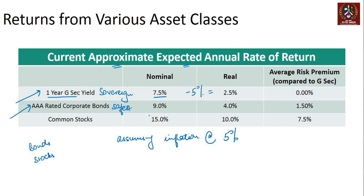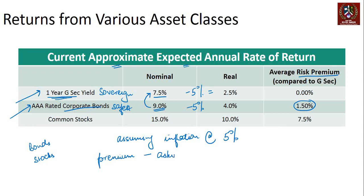Moving to triple-A rated corporate bonds — the safest category of corporate bonds — a one-year corporate bond gives us nine percent. In real terms, subtracting five percent inflation, we get four percent. The spread between nine percent and seven and a half percent is one and a half percent, meaning we expect one and a half percent extra return from corporate bonds compared to government securities. That's the risk premium — the premium we are asking for to invest in a riskier asset.